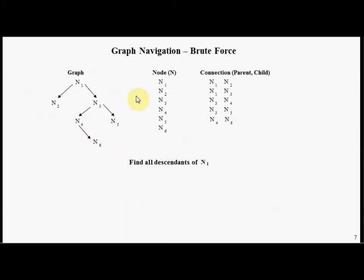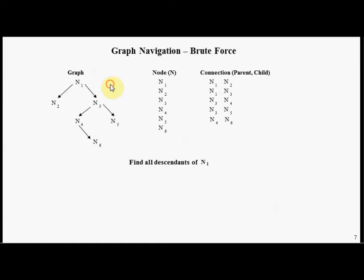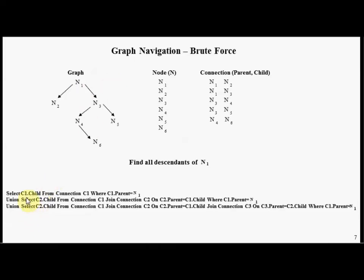Let's use SQL to explore a brute force method for navigating a graph. Given our graph, we would like to find all of the descendants starting from node N1. The brute force method has select statements, union select statements, representing the various levels of the graph. One of the problems with this approach is you have to have hard-coded knowledge as to the number of levels of the graph in advance.